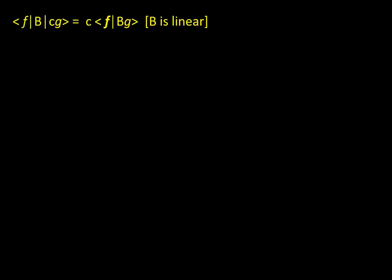The first question: f|B|cg equals c·f|B|g. Of course, B is linear. I must mention that this is the bracket notation used in this problem and in all coming problems, which we discussed in our earlier session Conquiz15. But let us have a quick review of the bracket notation.